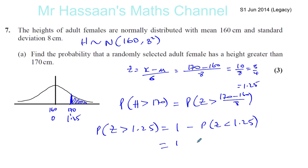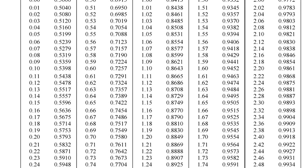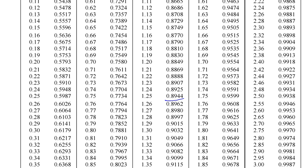Okay, which is 1 minus, and then we can take that value that we saw. 1.25, if we go down. 1.25, you can see it's 0.8944.